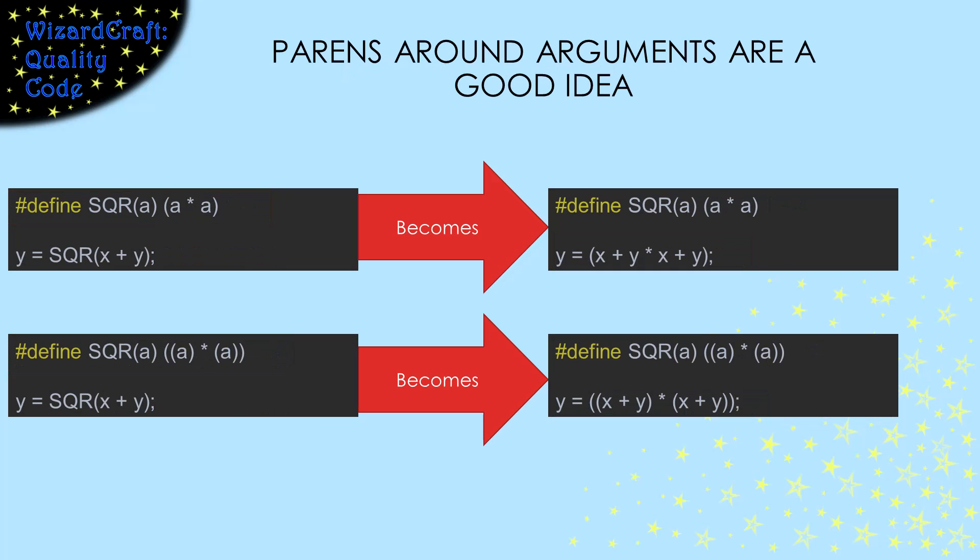The wisdom of including parentheses extends to the use of a define's parameters in the replacement string. Remember that we can pass any string into a parameter. So if I pass x plus y into this pound-define that is supposed to square its argument, the result will not be correct. However, if I put parentheses around the parameters when they're used in the replacement string, then the pound-define works even if an expression is passed into it.